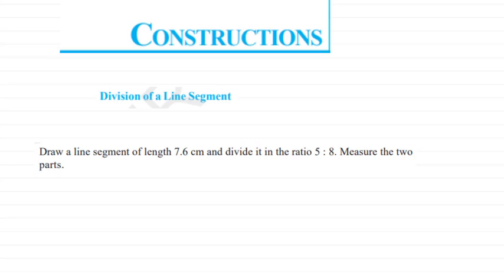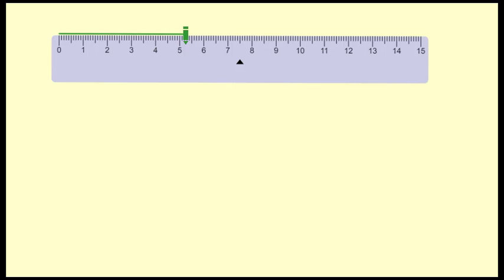Today we will see construction. The first topic is division of a line segment. Let's say we have a line segment of 7.6 centimeters and we have to divide it in the ratio 5:8, and then measure the two parts. Let's see how to draw it. Here I have just drawn a line that is 7.6 centimeters.